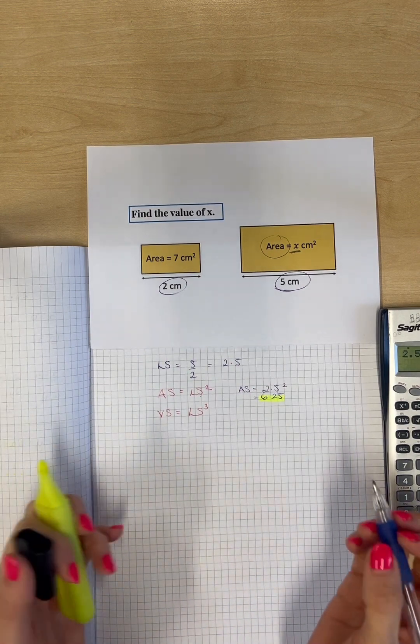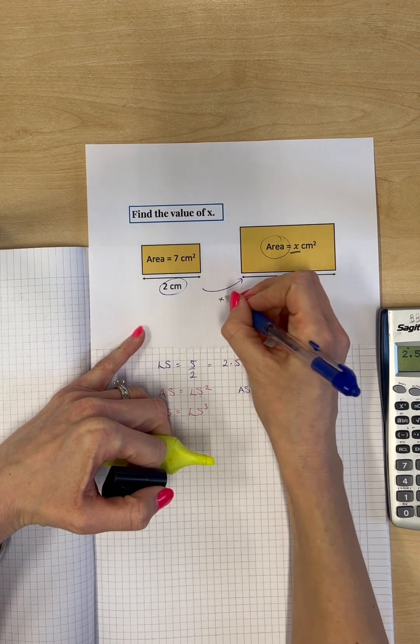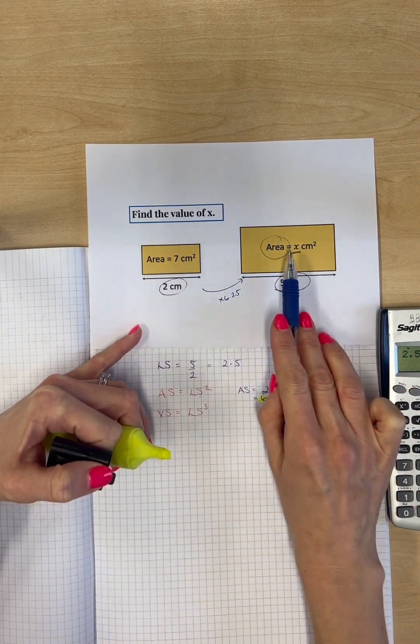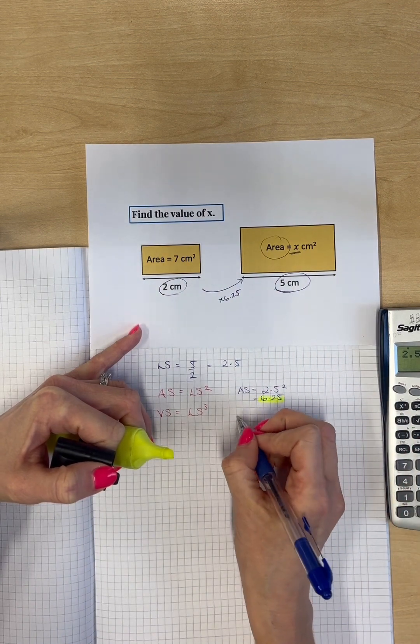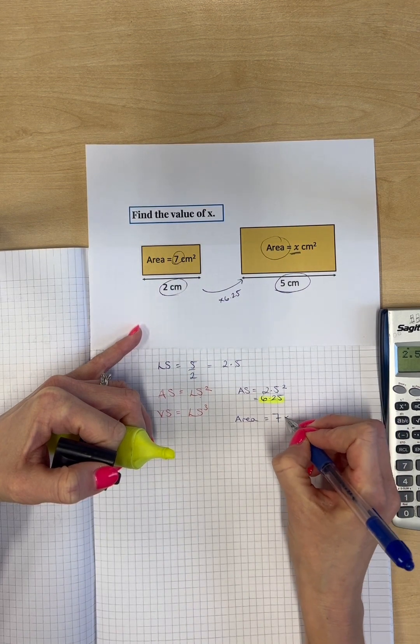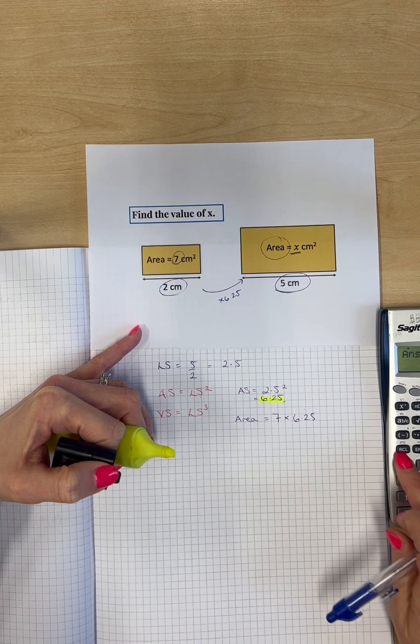We're not done. We know that to move between areas, we have our area scale factor, which is 6.25. We're going from the smaller one to the bigger one. So we do area equals 7 times the scale factor. And that should give us our answer.